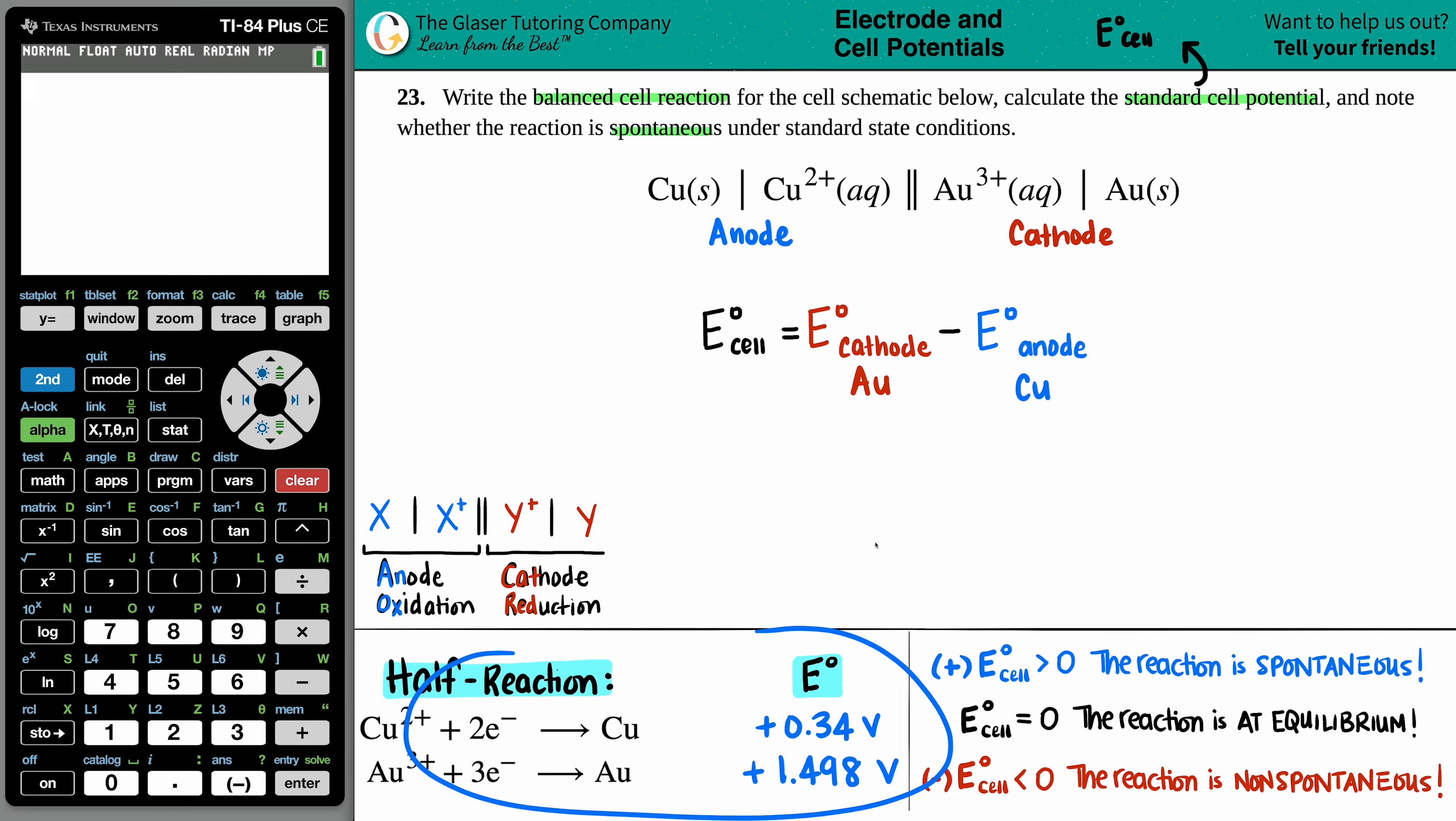I went in the back of the textbook to find out what those cell potentials are for the copper and the gold. Just know that if you're using cathode minus anode, you do not have to change any of these signs. And that's why I'm doing this right away, because I don't care what the coefficients are in the balanced equation. You never multiply your E values by how many you have of them.